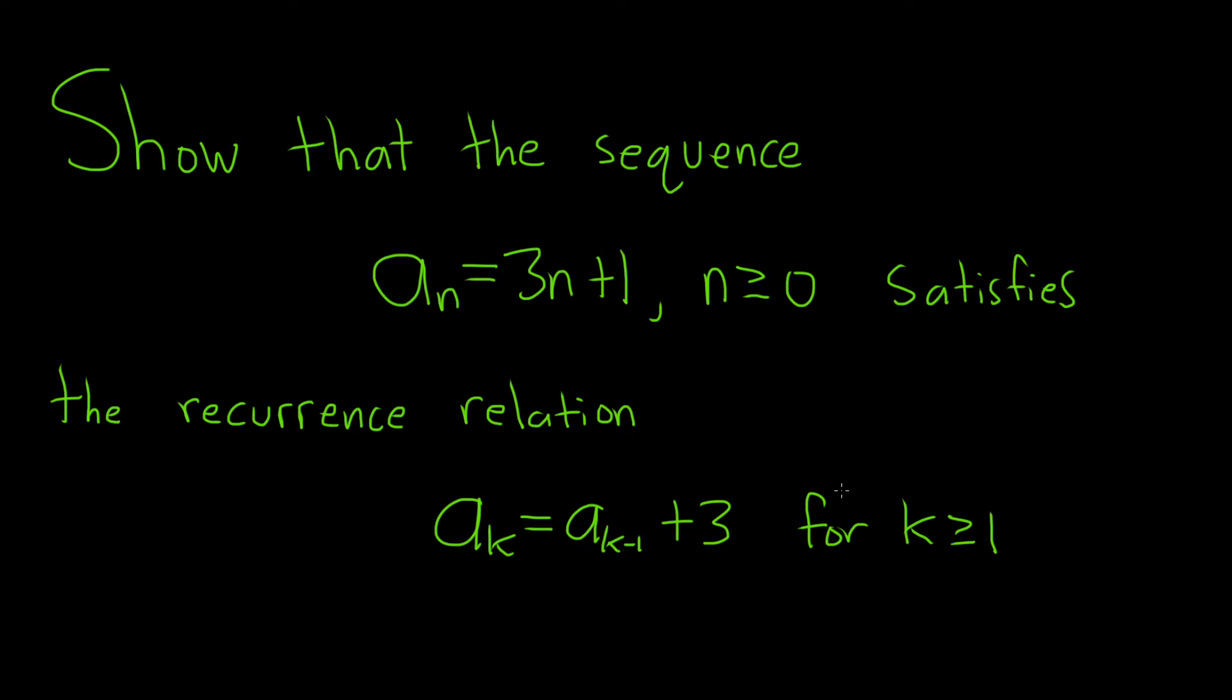In this problem, we're given a sequence $a_n = 3n + 1$ for $n \geq 0$. And we're told to show that it satisfies this recurrence relation whenever $k \geq 1$.